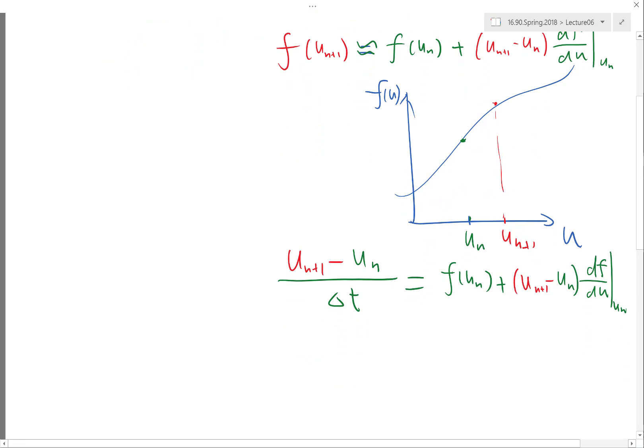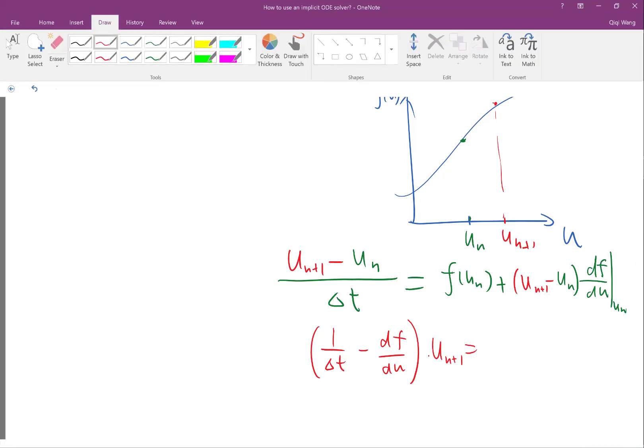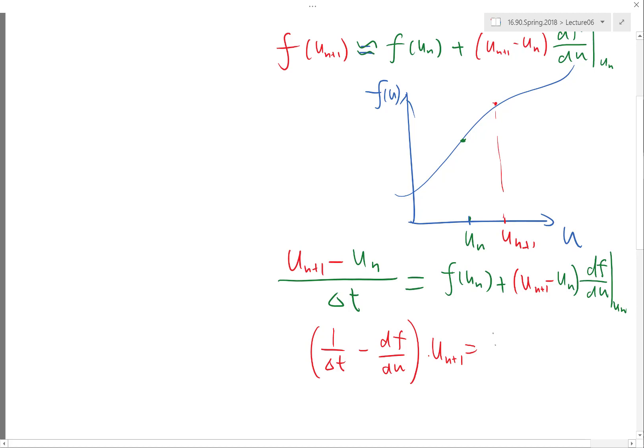So, then the step becomes just pretty simple. I just combine the terms. The left-hand side, I'm going to move everything that is red. This minus df/du times u_n+1 is going to be equal to everything that is green. u_n divided by delta t plus f(u_n) plus u_n times df/du at u_n. Minus. Oh, minus. Yeah, yeah. Thank you. Minus.